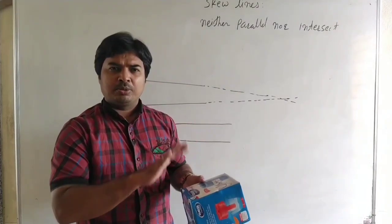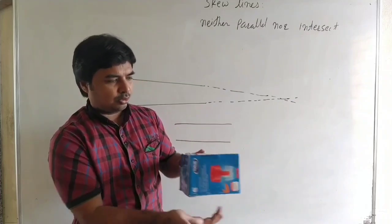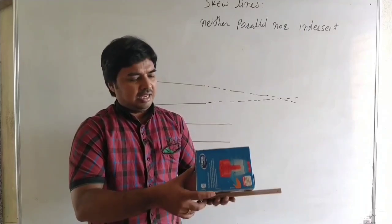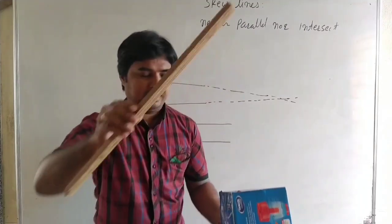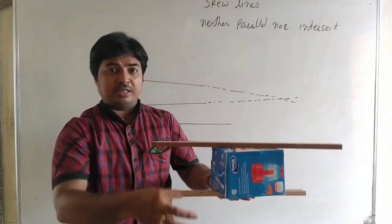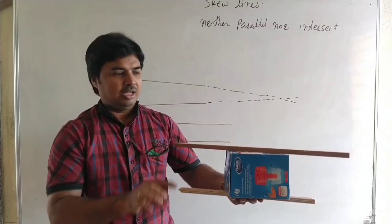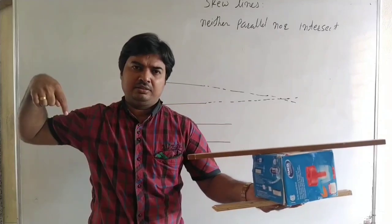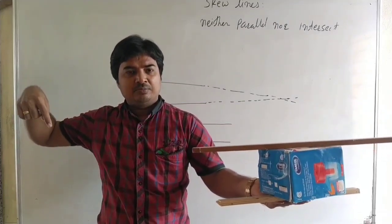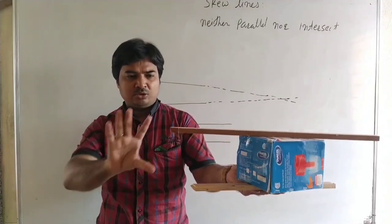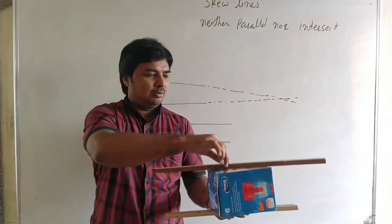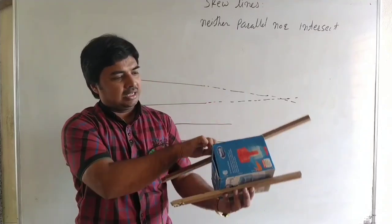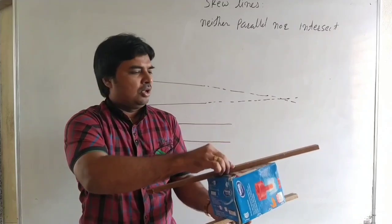Here we see a cube, which has six planes. We consider a line lying on one plane and a second line lying on a different plane. These two lines are neither parallel nor intersect, because if we extend both lines infinitely, they do not meet — they lie on different planes.